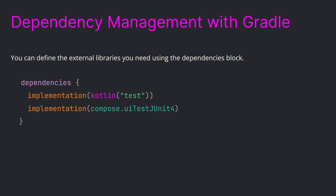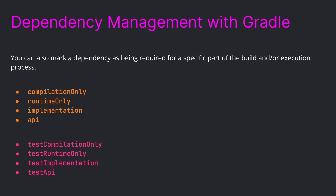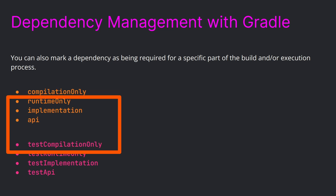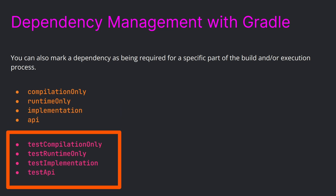You can define external libraries using the dependencies block. Most of the time you add a library using the implementation function. You can also mark a dependency as required for only a specific part of the build or execution process: compileOnly means it's used only during compilation; runtimeOnly means it's used only at runtime; implementation means it's used in both. The api configuration exposes dependency transitively. You also have test equivalents: testCompileOnly, testRuntimeOnly, testImplementation, and testApi.